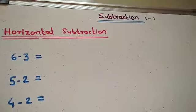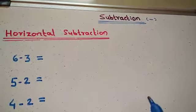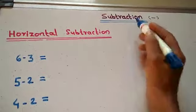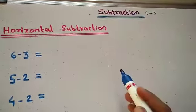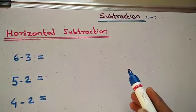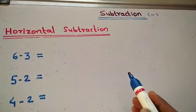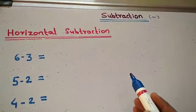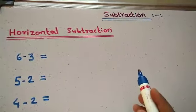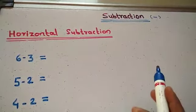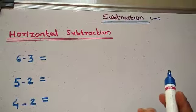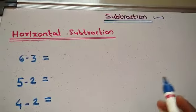Subtract means minus karna, kom karna. Now, if 0 is subtracted from any number, the answer is the number itself. Kisi bhi number mein se 0 subtract kia, the answer is the number itself.